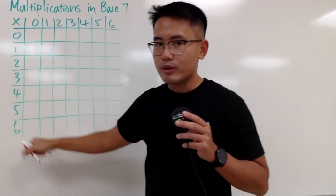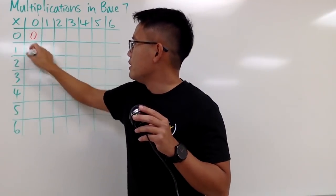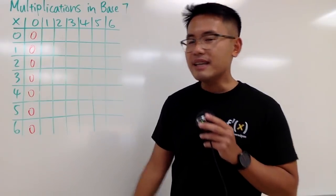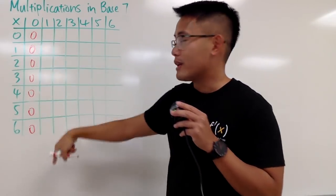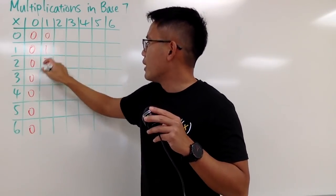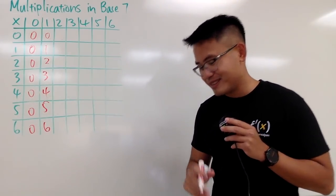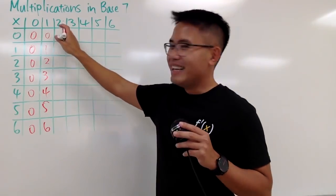First, I will do 0 times all that, which is just all 0. So this is pretty easy, just 0 all the way. And next, I will do 1 times all that, which is just all that. So you just pretty much write it down: 0, 1, 2. And this is just a copy and paste, like how do you guys do your English essays? I know.